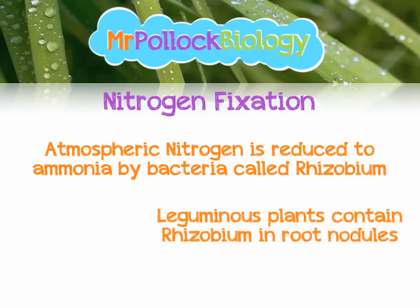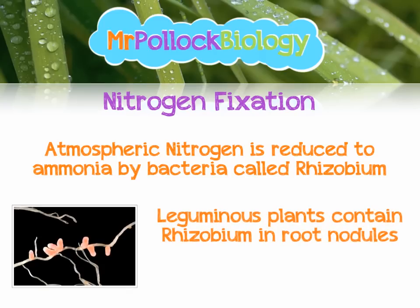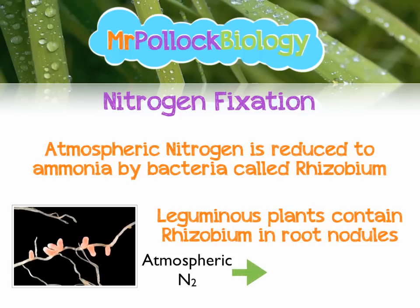The other option is a mutualistic arrangement where legumes — things like peas and beans — have nodules on their roots that contain rhizobium bacteria. This is a symbiotic relationship, so both organisms gain from it. The rhizobium produce amino acids which are given to the plant, and the plant produces carbohydrates by photosynthesis which are given to the rhizobium. So everyone's pretty happy.